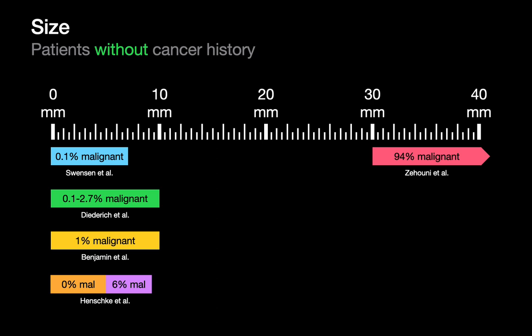Looking at examples on the left side of this slide by Swenson, Diederich, Benjamin, and Henschke, the take-home message is that the pre-test probability of subcentimeter nodules for malignancy is quite low. Swenson looked at nodules from zero to seven millimeters and observed a 0.1% malignancy rate. Henschke looked at two buckets: for zero to six millimeter nodules she reported zero percent malignancy, and for six to ten millimeters she observed a 6% malignancy rate.